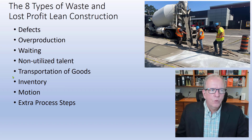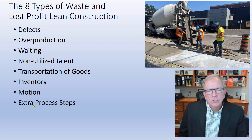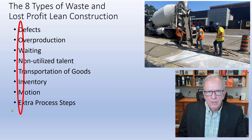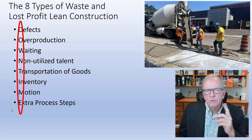The eight areas of waste we are exploring, if you're new to lean construction, are: defects, overproduction, waiting, non-utilized talent, transportation of goods, inventory, motion, and extra processing steps — and they spell the word DOWNTIME. That makes it much easier to internalize and remember, so that when you're actually seeing something you can recognize it.